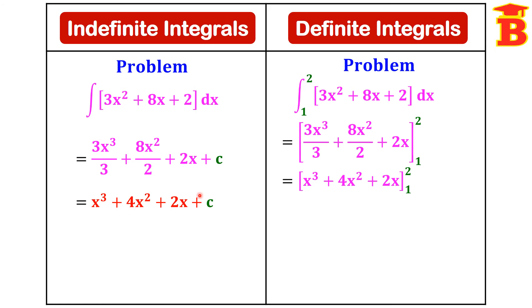Now note the difference between the two sides. In the indefinite integral this is the general solution — we add plus C and stop the answer. Whereas in the definite integral we don't add the constant because we have limits, so we apply the limits. Up to the integration step both are the same — the only difference is that one side has plus C and the other side has limits to apply. Since we have limits we apply upper limit minus lower limit and finally get a value.